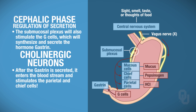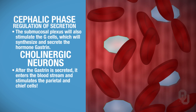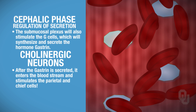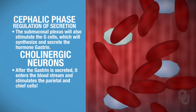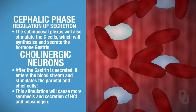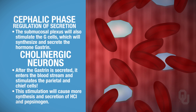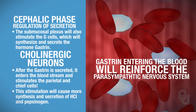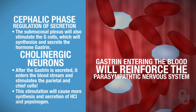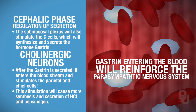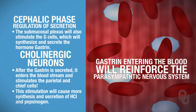Once gastrin has been produced, it goes out into the blood—because hormones travel through the bloodstream—and then, through the blood (not through the submucosal plexus), it's going to stimulate the parietal cells and the chief cells. This causes more synthesis and secretion of hydrochloric acid, and the chief cells synthesize and secrete more pepsinogen. So gastrin going out into the blood reinforces the actions of the parasympathetic nervous system by targeting those parietal cells and chief cells.